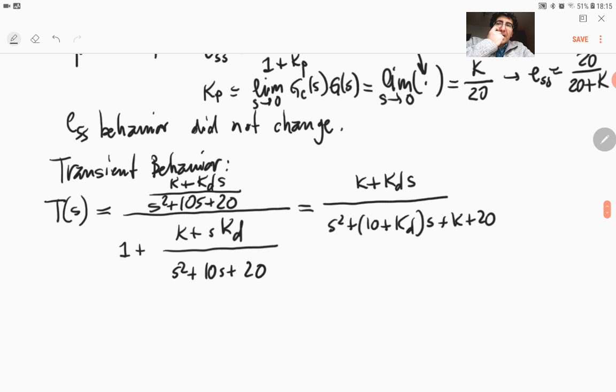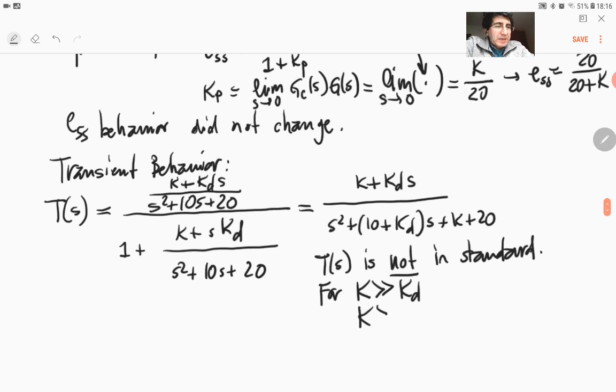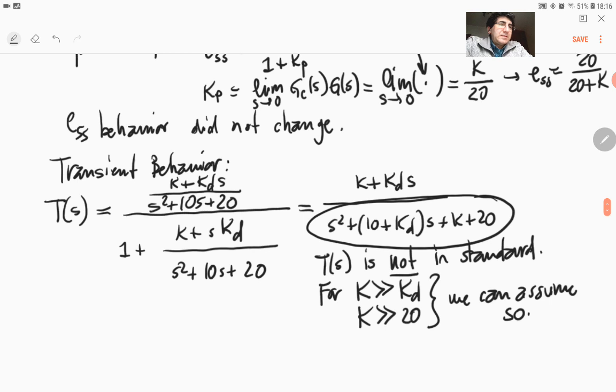Now again, we will have to make the same assumption. So TS is not in standard form. In this case, we not only have a discrepancy between the gain in the numerator and the last term in the denominator, but we also have a zero in the numerator. So for K larger than KD, meaning that the S term is negligibly small as compared to the constant term, and K also being larger than 20, we can assume so. We will still assume that the denominator is basically what determines the transient behavior without any significant effect from the zero.